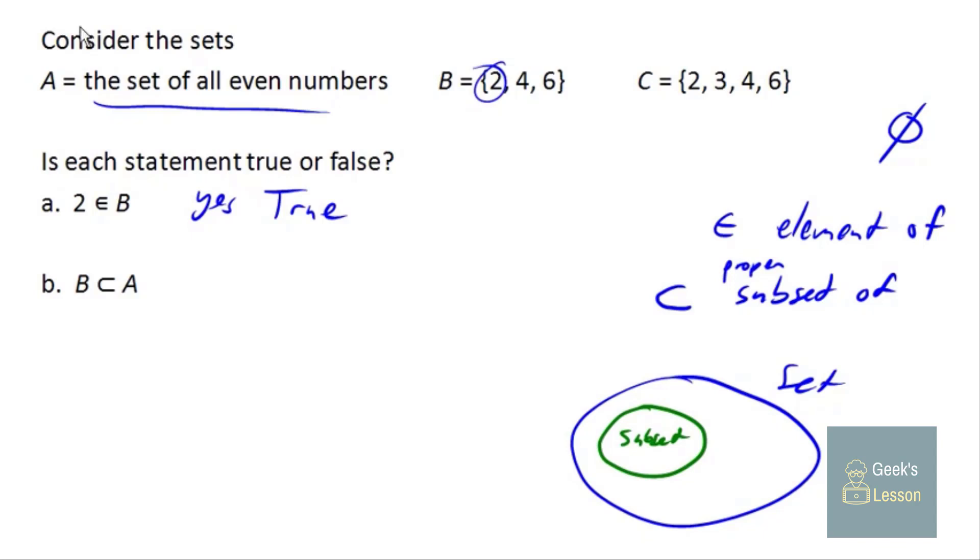So if we were to look at the set A here, A is the set that contains all even numbers. So that's 2, 4, 6, 8, 10, 12, so on and so forth. So is B a subset, or is it contained within the set of A? And you'll notice that the elements from B, 2, 4, and 6, all do in fact exist inside set A. So this is true.